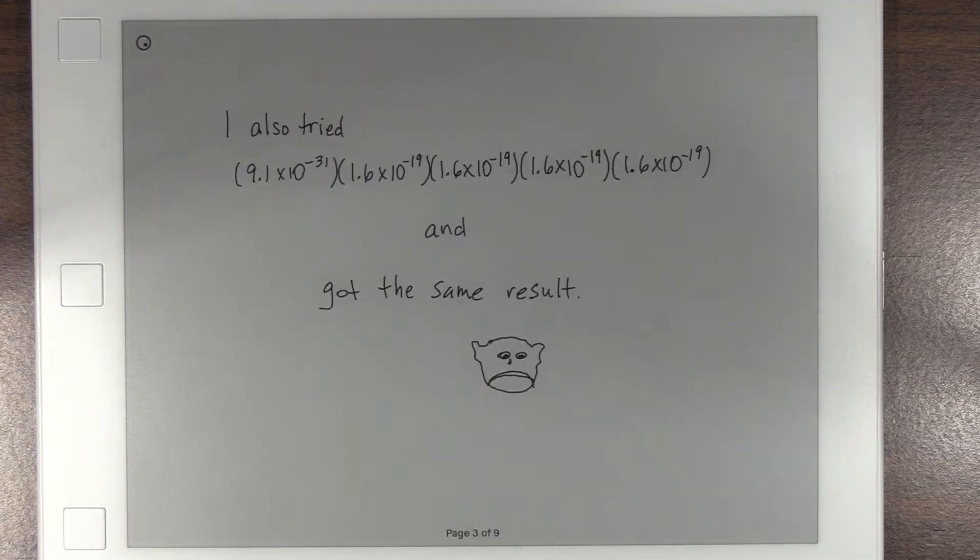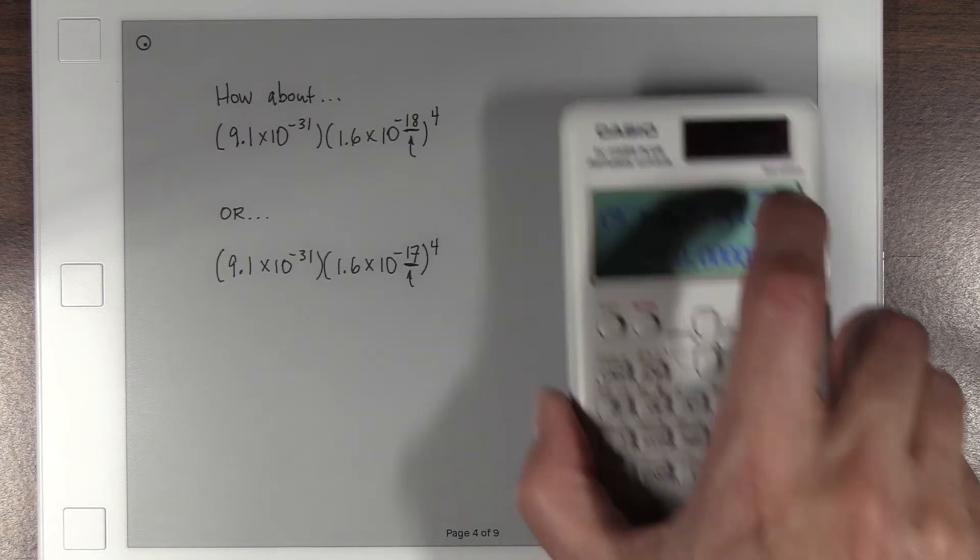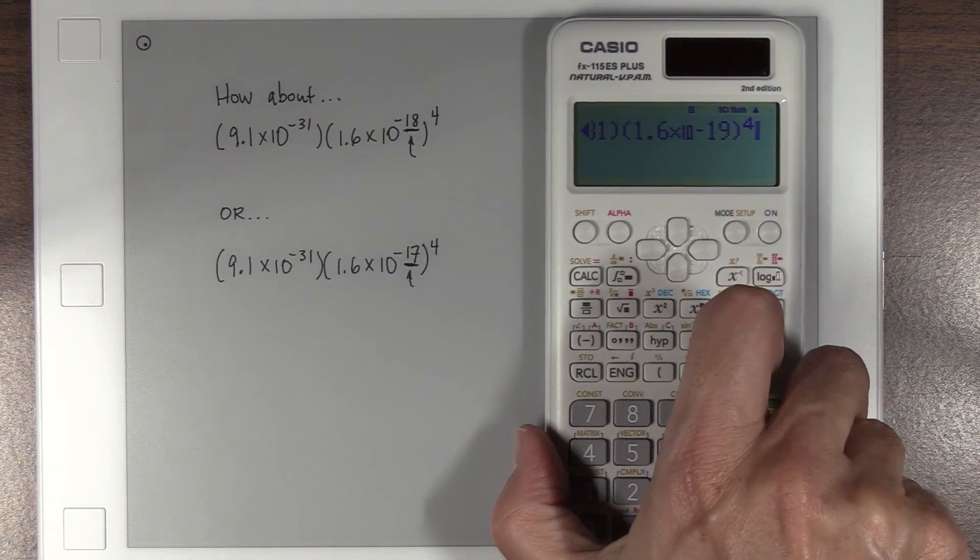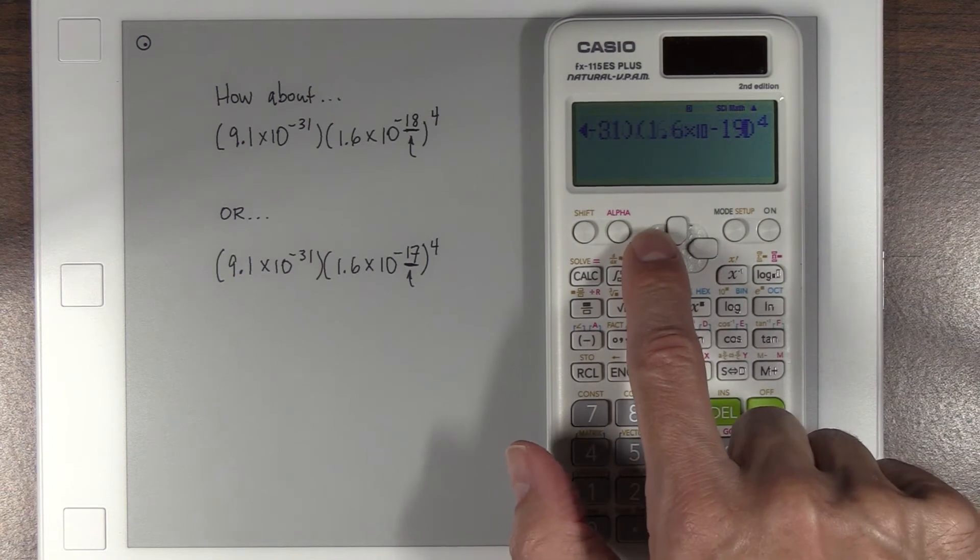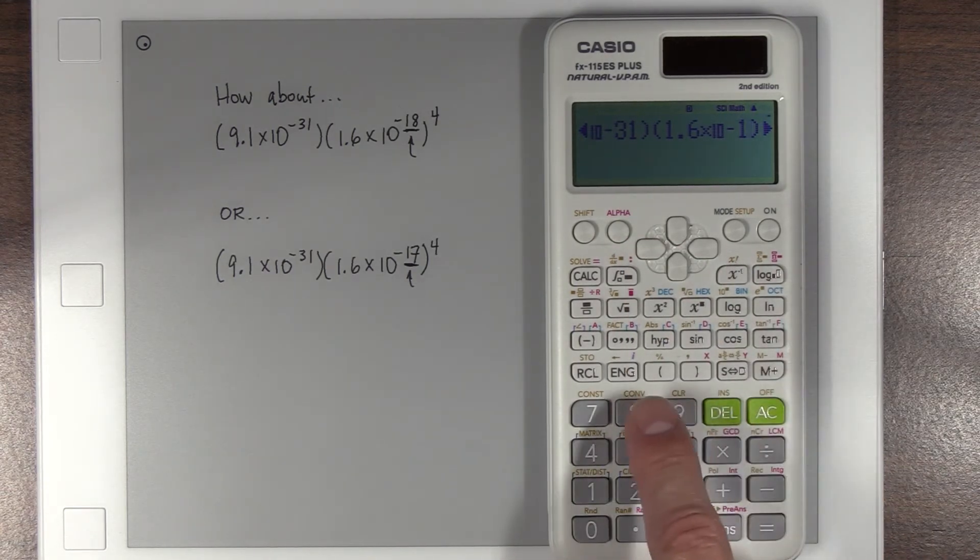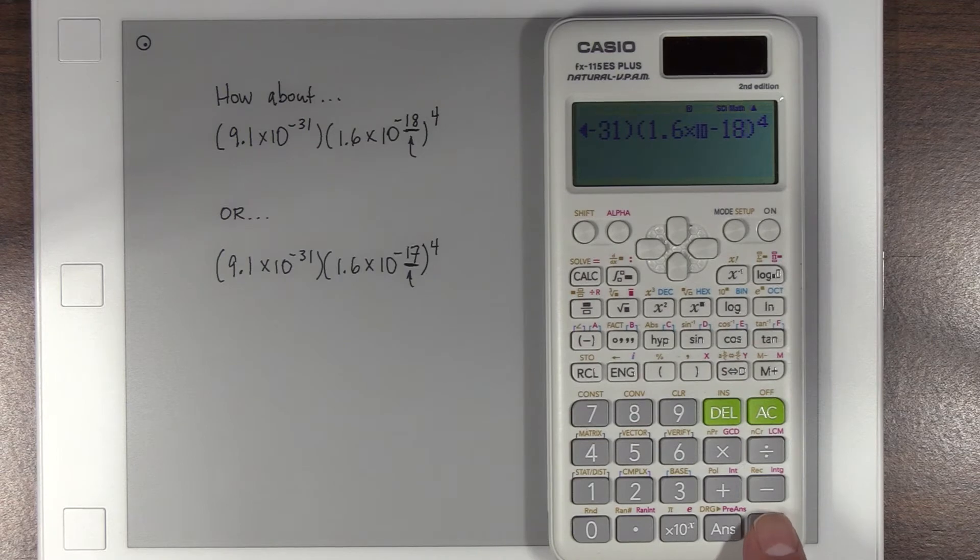Let me try just, you know, obviously this is impractical, but instead of 1.6 times 10 to the negative 19th all to the fourth power, I'll just multiply that times itself four times, hoping that maybe the calculator would react differently, but it doesn't.